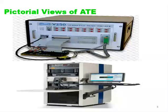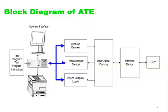Looking at pictorial views of ATE, we can see typical examples with different sections. In the block diagram of a typical ATE, starting from the right-hand side, we have the UUT — unit under test — connected to the interface device, which is the sensing terminal. This connects to the input and output circuitry, which is responsible for reading, displaying, or producing results.